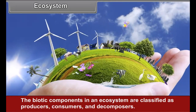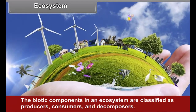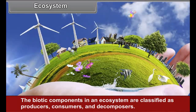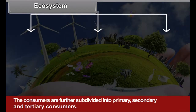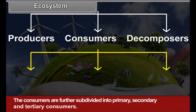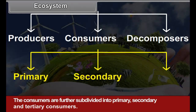The biotic components in an ecosystem are classified as producers, consumers, and decomposers. The consumers are further subdivided into primary, secondary, and tertiary consumers. See figure 11.1.